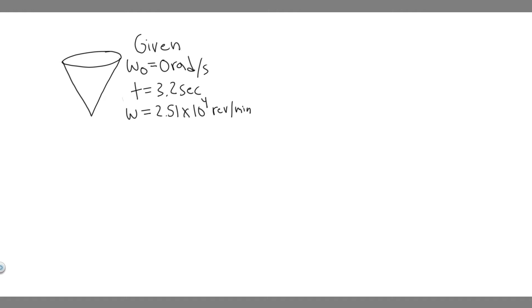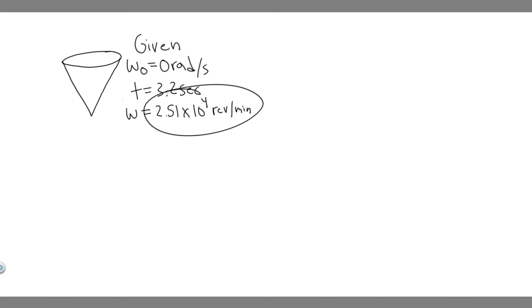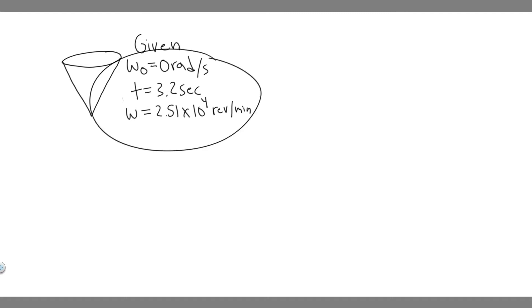We're told it's going to turn for 3.2 seconds, so the time interval is 3.2 seconds. And then the final angular velocity is going to be 2.5 times 10 to the 4 revolutions per minute. This is the information we're given, and for Part A we're trying to find the angular acceleration alpha.